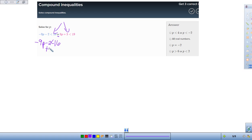So I just start by adding 2 to both sides, right? And now we have negative 9P is less than 18. And then I would divide by negative 9. Divide by negative 9.